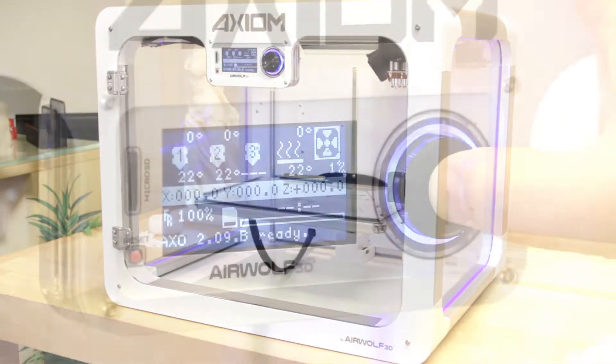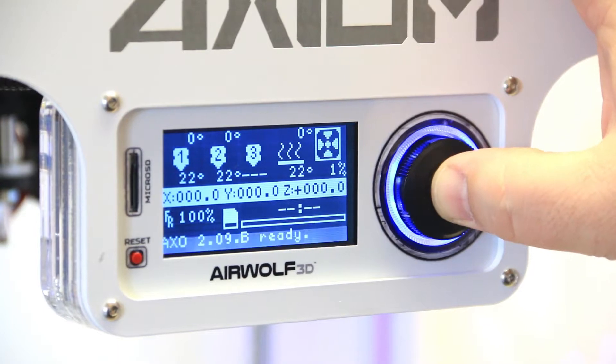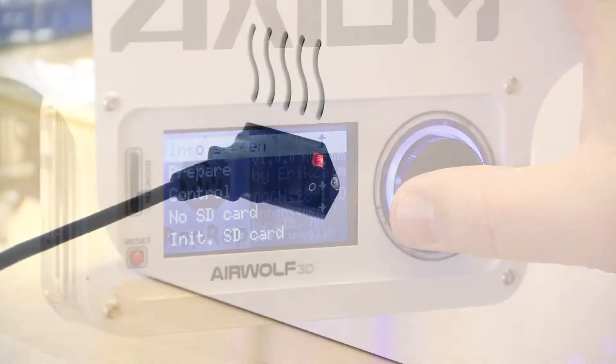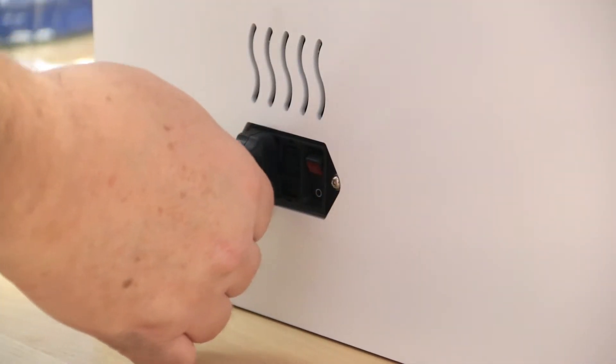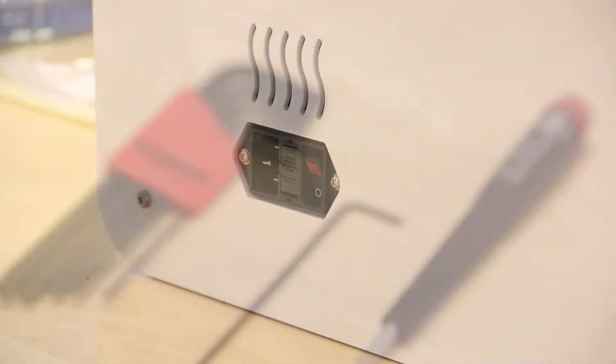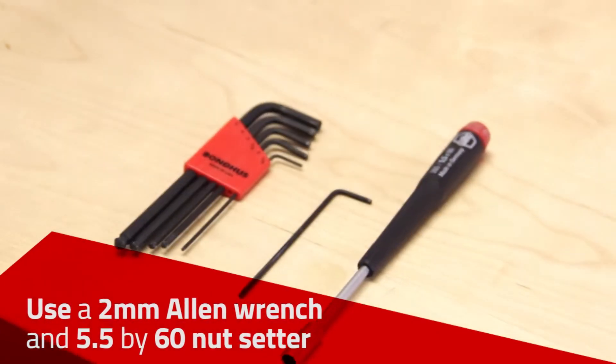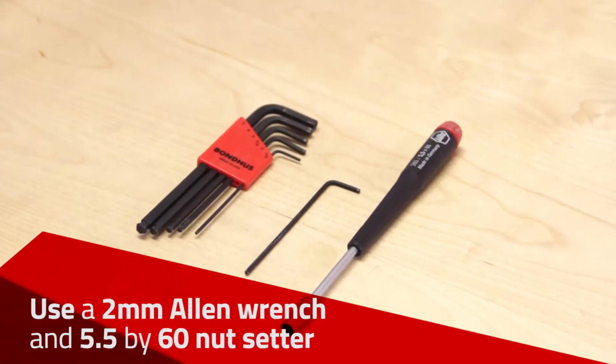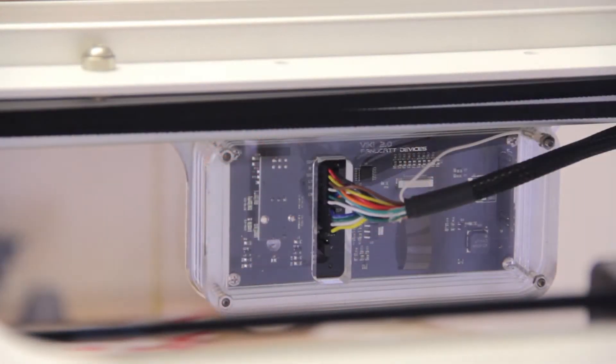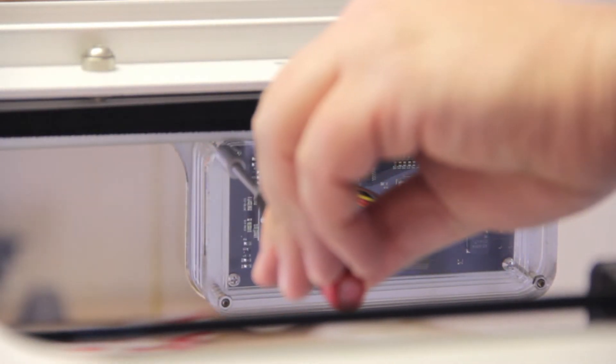This guide will instruct you on how to replace the Vicki LCD. Turn the printer off and unplug the power cable. Use a 2mm Allen wrench and a 5.5x60 nut setter to unscrew the four Vicki screws.